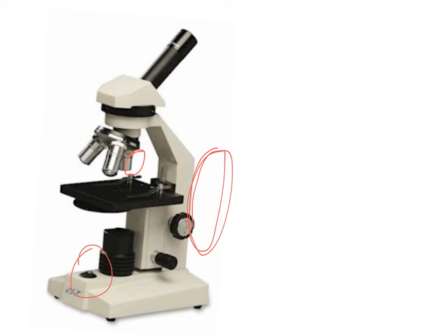When you are done with the microscope, please return it to its original condition. The stage should be all the way down at the bottom, the low power objective should be clipped into position, the power cord should be wrapped around the prongs again, and the dust cover should be placed back on top of the microscope.